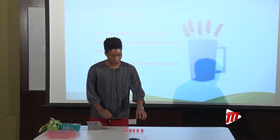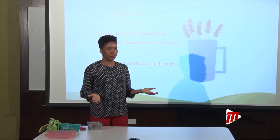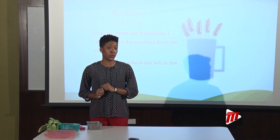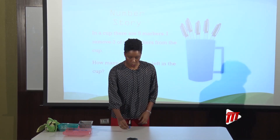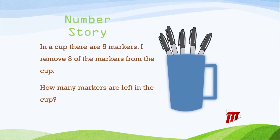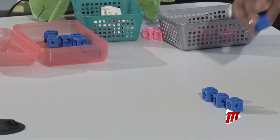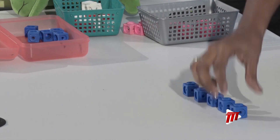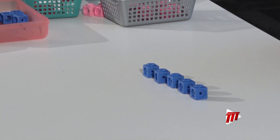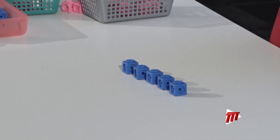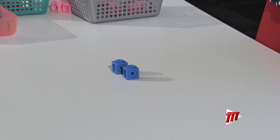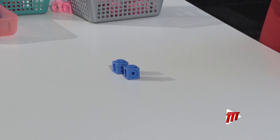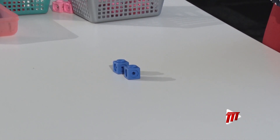I'm going to show you how to solve this. I don't have any markers today but I have counters, and I'm going to use my counters. So I have five markers — one, two, three, four, five. Five markers in all. I remove three of my markers — one, two, three. How many markers are left? One, two. Five take away three equals two.